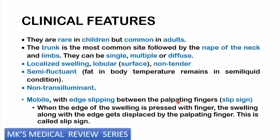Some clinical features of lipomas. First, the epidemiology: this condition generally affects older individuals and is a bit rare in children. The most common site where you find these swellings is pretty much on the trunk, followed by the nape of the neck, and then sometimes on the limbs. They may be single, multiple, or diffuse. If you get a single localized swelling, it may have a nodular surface. It is non-tender — so it's not painful — but in some rare cases there may be some pain.